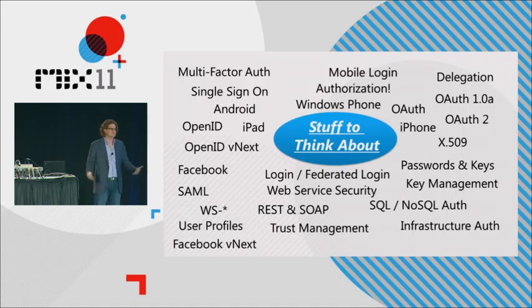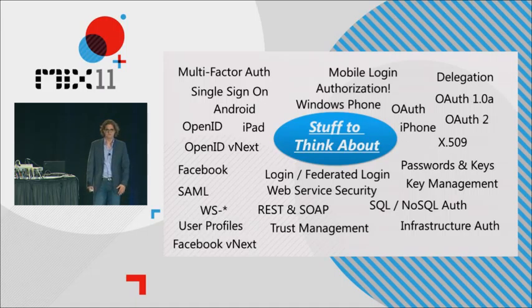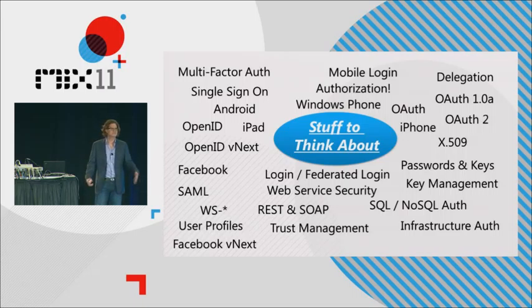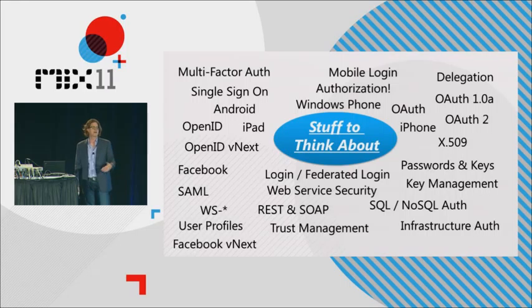If you have users, they may grant your site access to other things - that's called delegation. As soon as you think about delegation and REST web services, OAuth comes to mind. And as soon as you think about OAuth, do you use OAuth 1.0a or OAuth 2.0? Last but not least, there's the big question of authorization - inside your site and services, how do you deal with who has access to what?